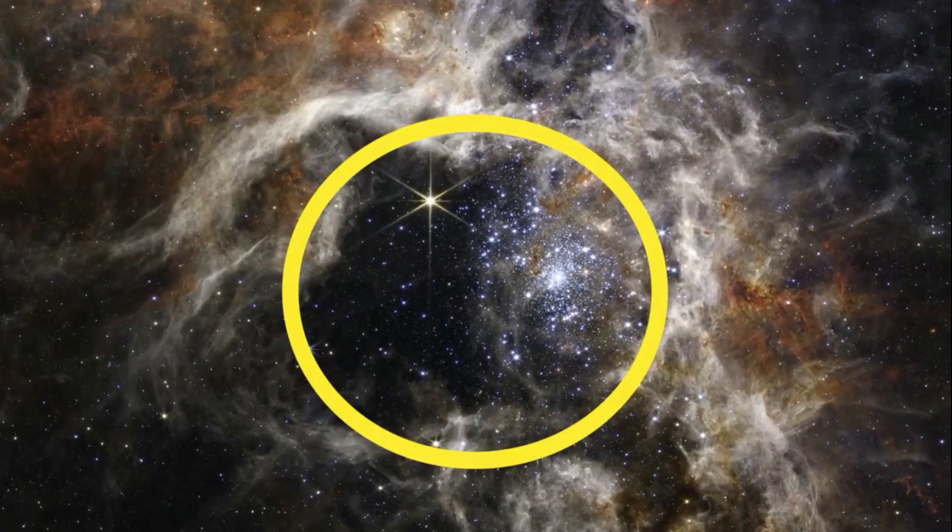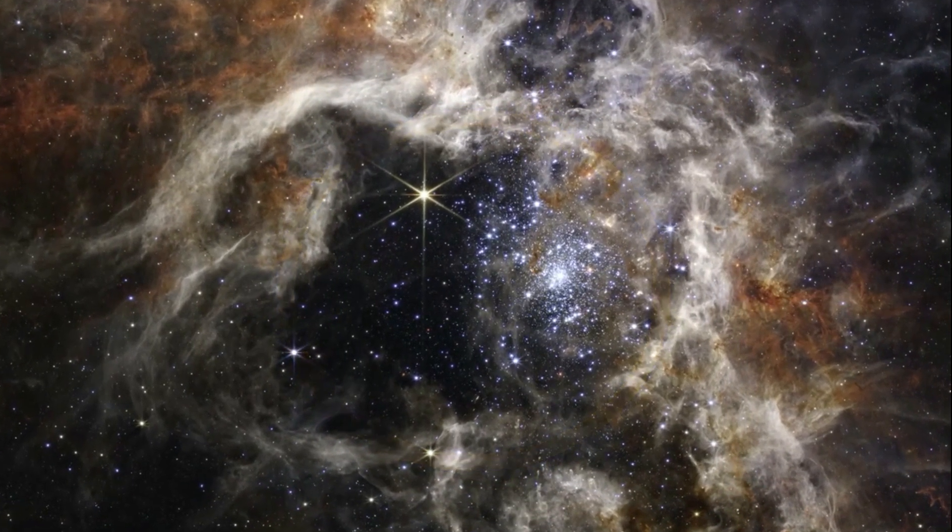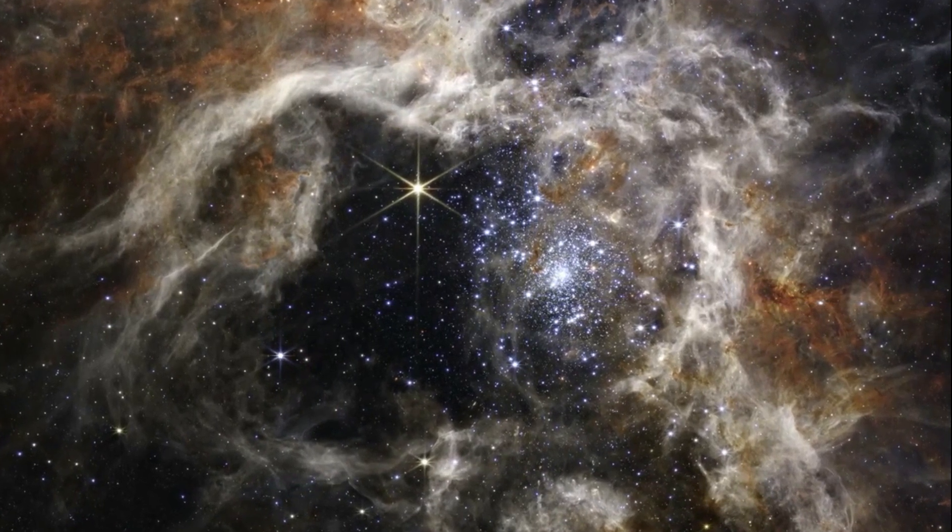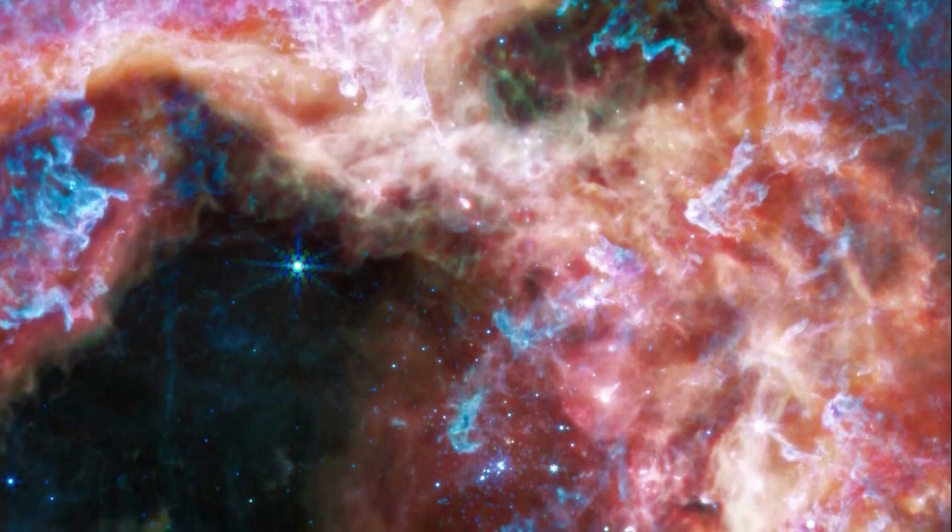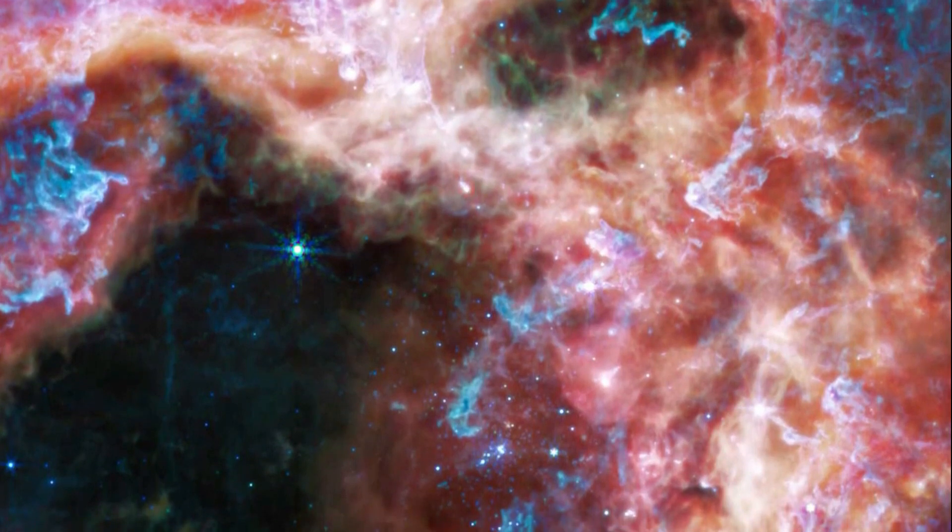Webb's infrared vision reveals thousands of stars in this region, which is also known as 30 Doradus. The image shows distant background galaxies.